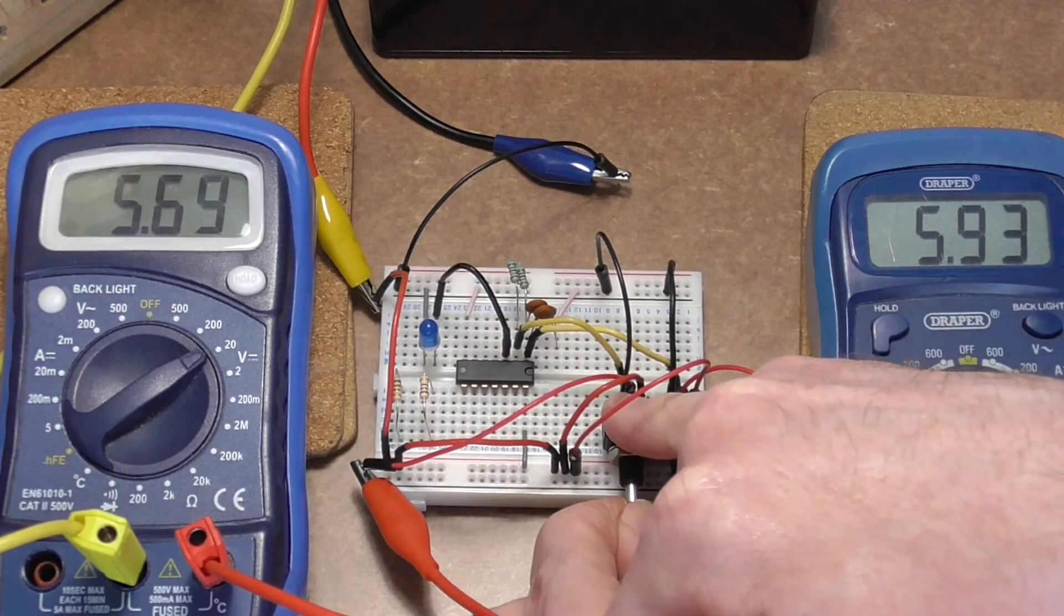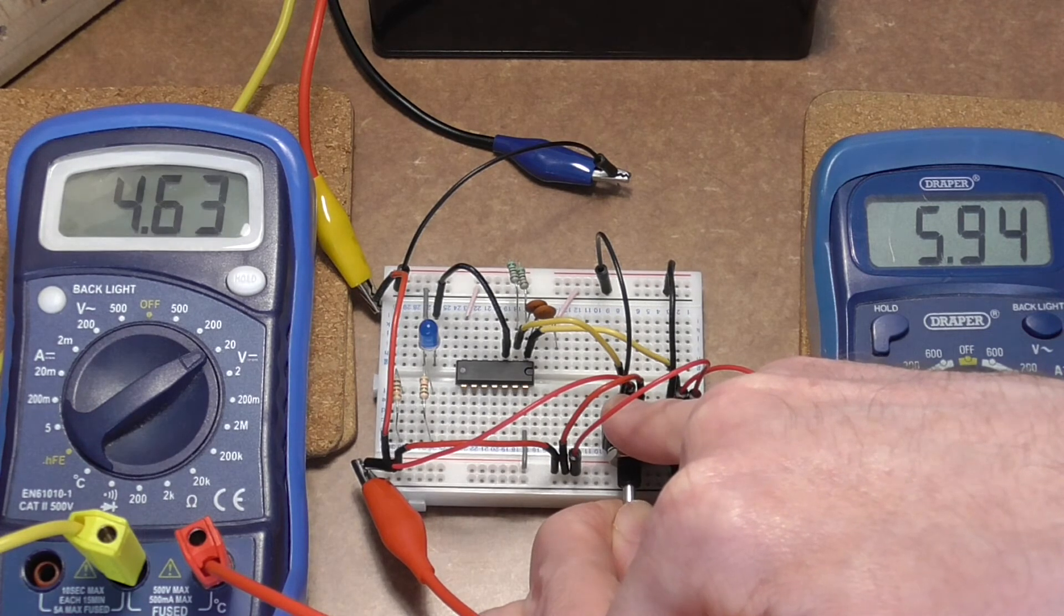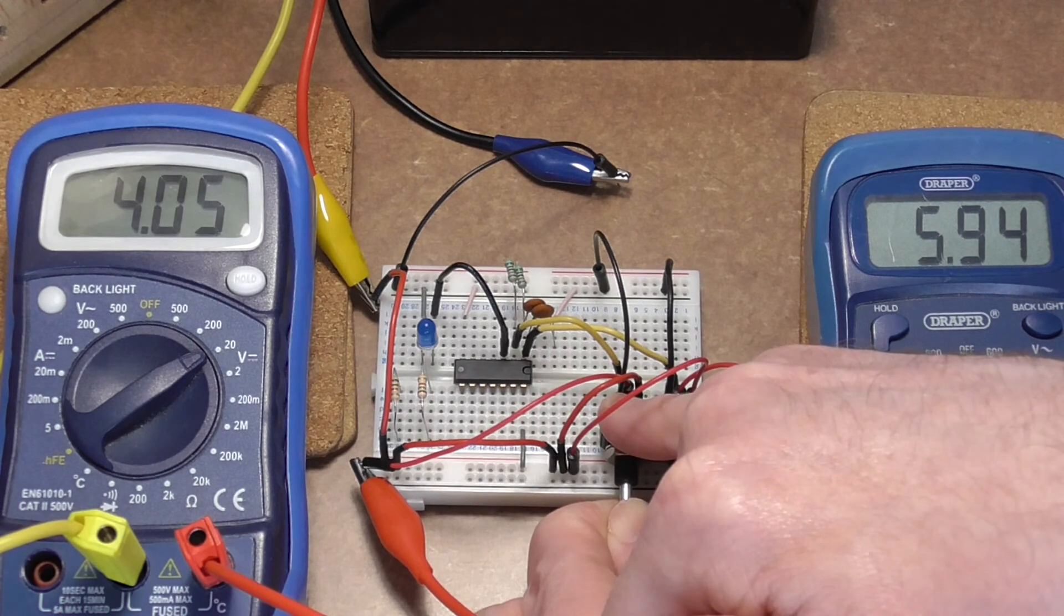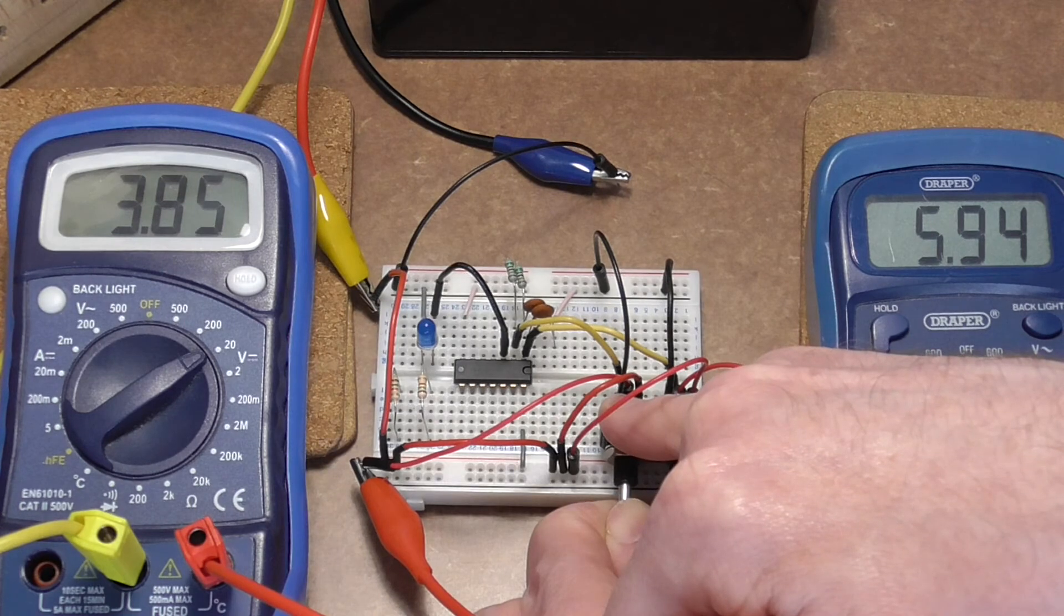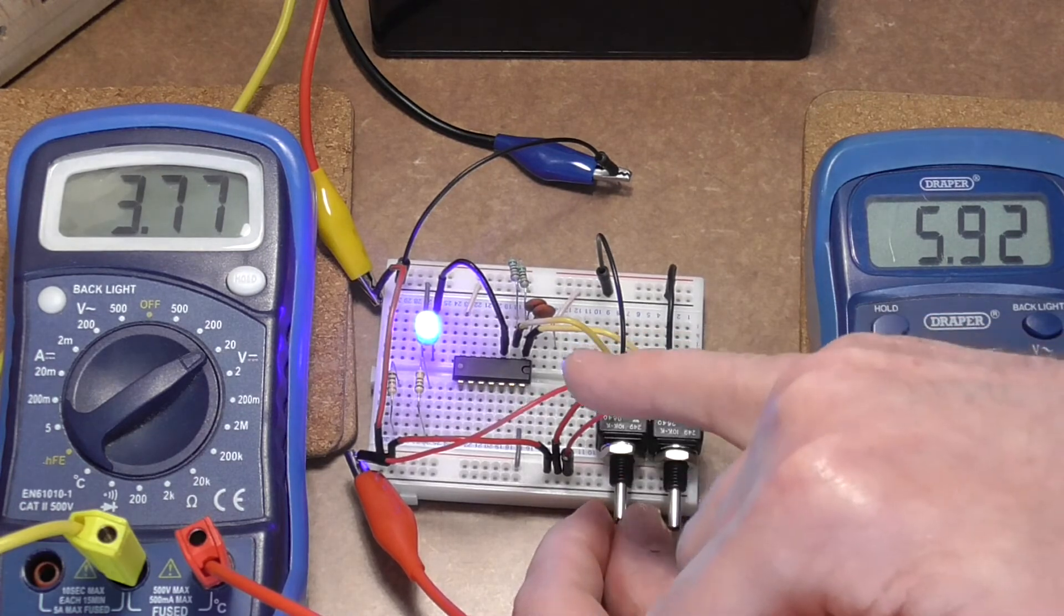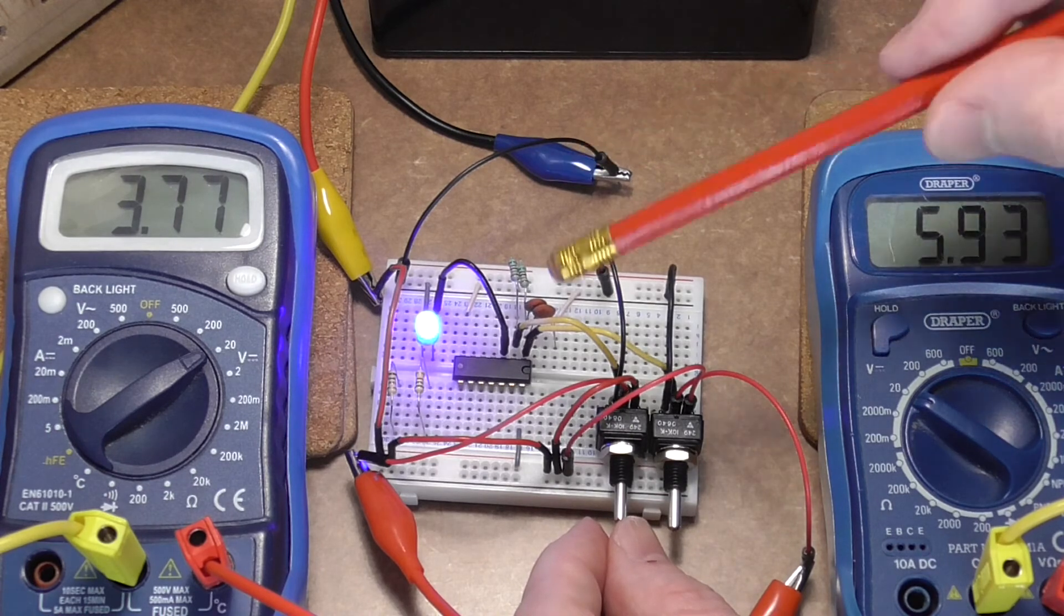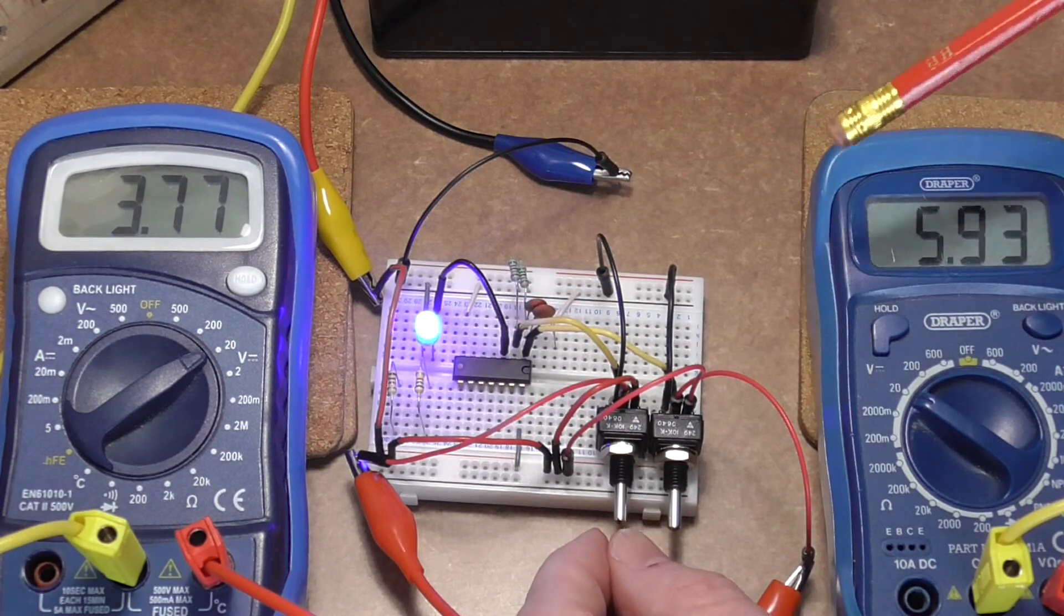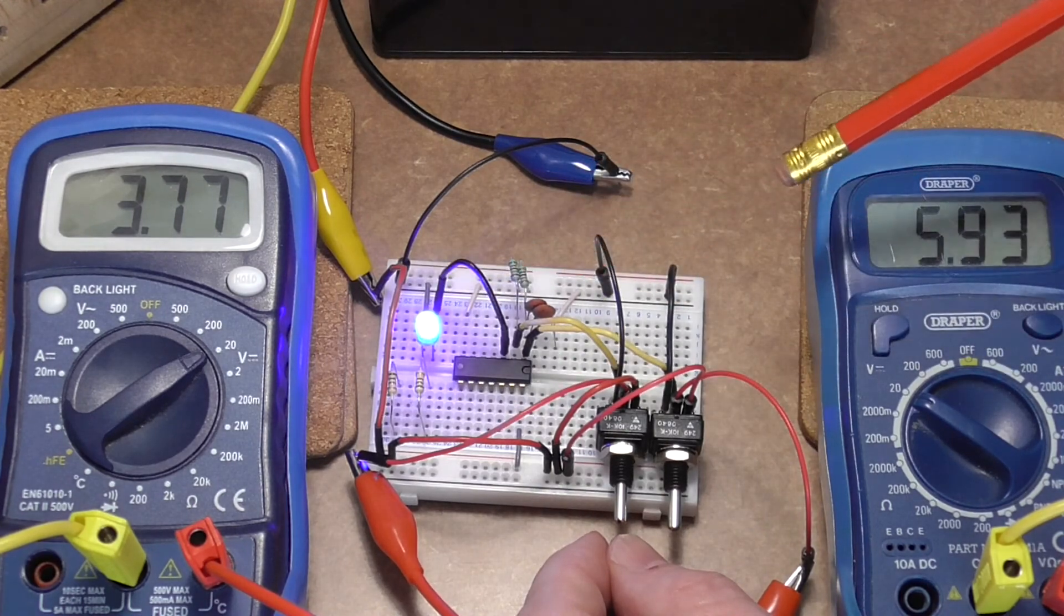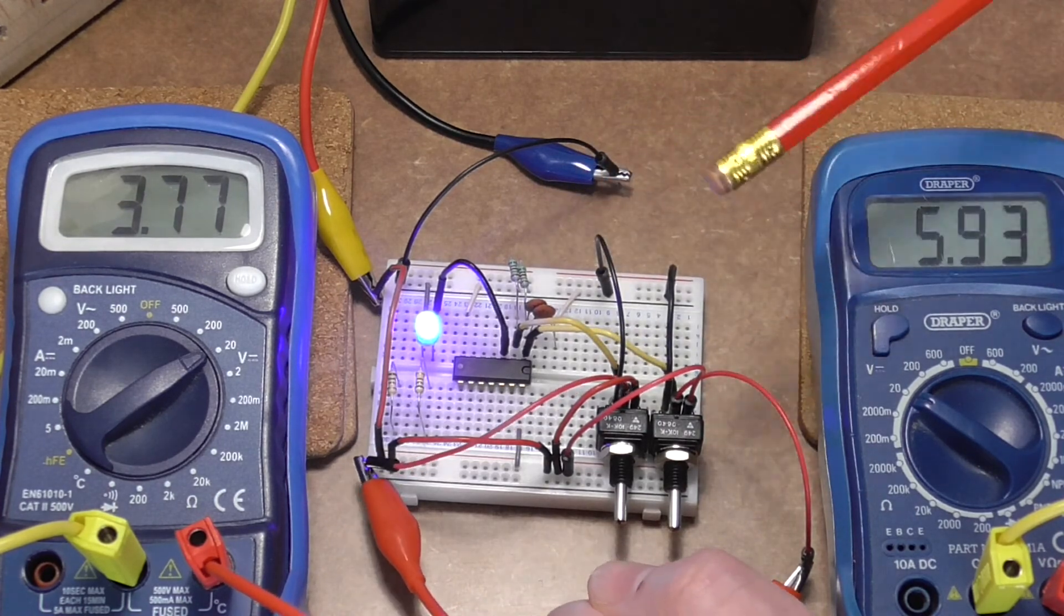And see at what point the LED comes back on, because at the moment we've got both inputs are high. We get down to three point eight, just under, before that triggered and said that basically the input on input two is now low.